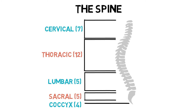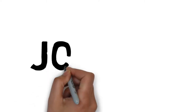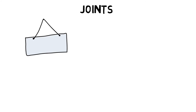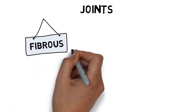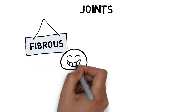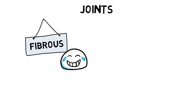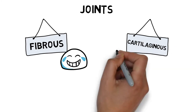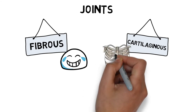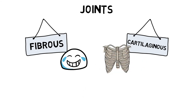Where two or more bones meet is called a joint. There are three different types of joints. Fibrous joints are held by dense fibrous tissue that do not allow any movement, such as teeth held in their sockets. Cartilaginous joints are articulating bones connected by cartilage, which only allow for a small amount of movement, such as ribs or between vertebrae in our spine.